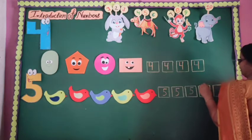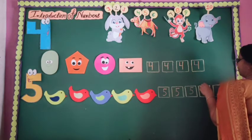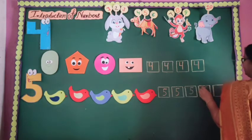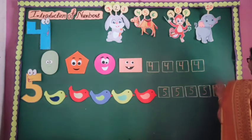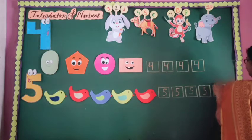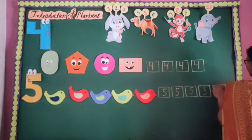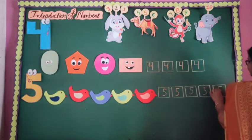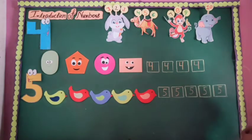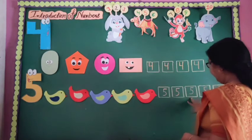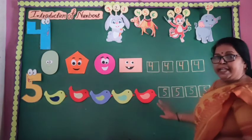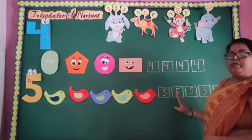Small sleeping line, small standing line, after that draw a curved line like this. How many times did I write number 5 here? 1, 2, 3, 4, 5. I wrote number 5 here 5 times.